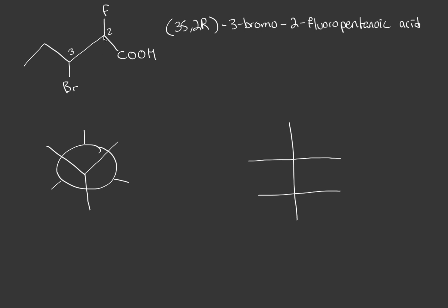What I mean by that is we don't see whether this fluorine is coming towards us or going back. However, this name does tell us how the stereochemistry is defined. So I'm going to redraw the molecule and then draw the fluorine and bromine with their correct stereochemistry.